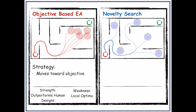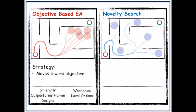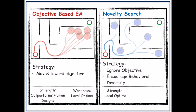To counter local optima, a type of evolutionary algorithm, novelty search, was created. The main strategy of novelty search is to ignore the objective during evolution and encourage behavioral diversity. Because of this strategy, novelty search is able to avoid local optima.